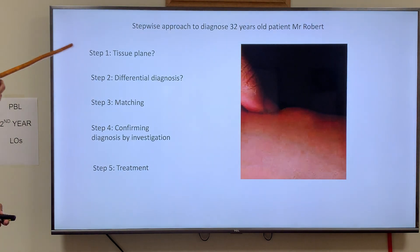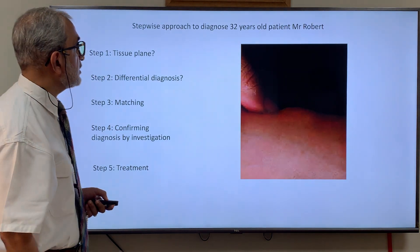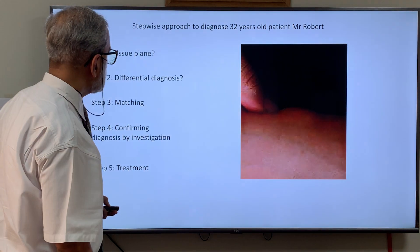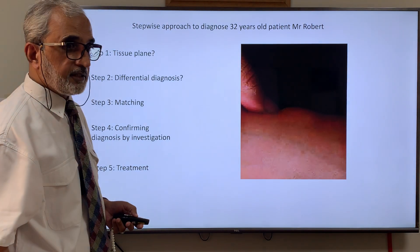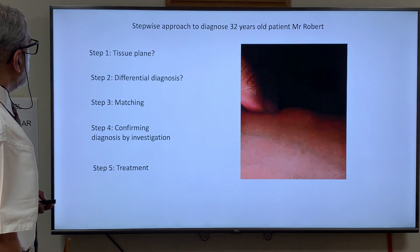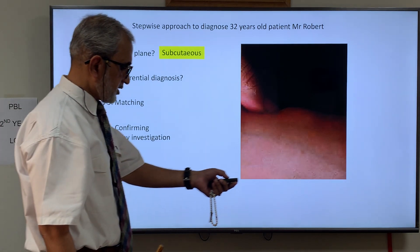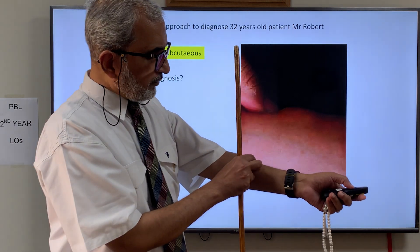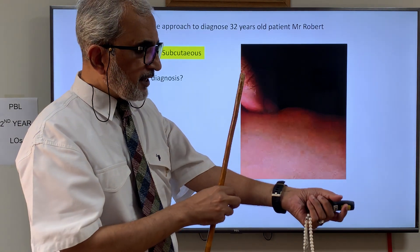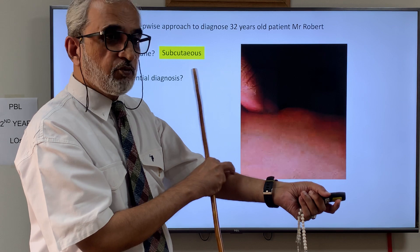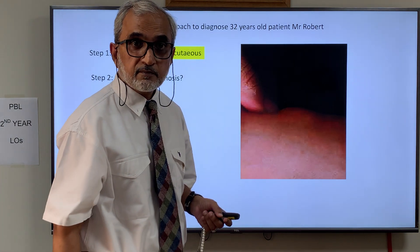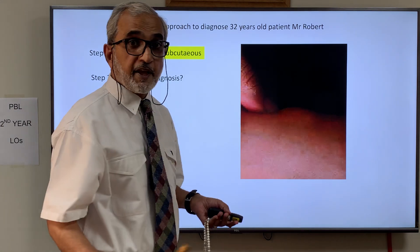Let me share a case — I still remember his name, Mr. Robert, a 32-year-old, when I was working at St. George's Hospital. When the patient came to me in the outpatient department, I first determined the tissue plane. I found it was subcutaneous because I could pinch off the skin from the swelling, so it was not in the skin. When I contracted the muscles and moved the swelling, the movement became more obvious, meaning it was not attached to muscle. And since it was mobile, it could not have been from bone.